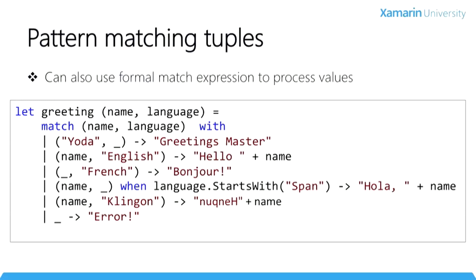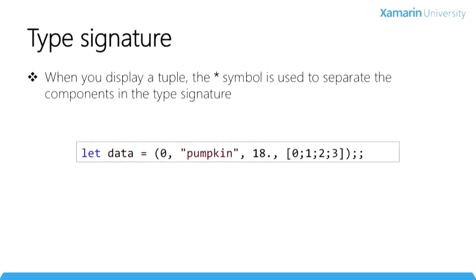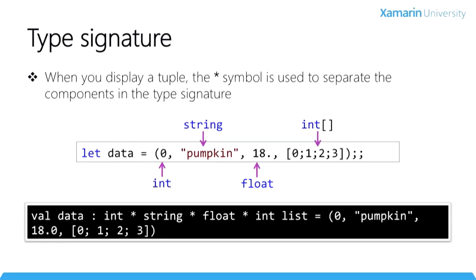F-Sharp has a special type signature to represent a tuple. It uses asterisks as separators between the types making up the tuple definition. For example, a tuple defined with several different types will have those types included with asterisk separators in its actual type signature.